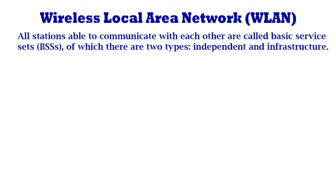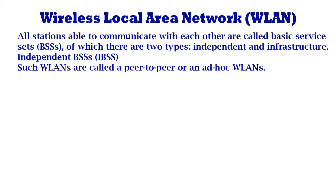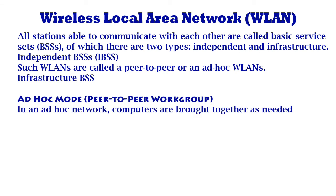All stations able to communicate with each other are called Basic Service Sets, i.e. BSS, of which there are two types: Independent and Infrastructure. Independent BSS (IBSS) exists when two clients communicate without using APs but cannot connect to any other BSS. Such WLANs are called peer-to-peer or ad-hoc WLANs. The second type is called an Infrastructure BSS, which may communicate with other stations only in other BSS and must use APs.